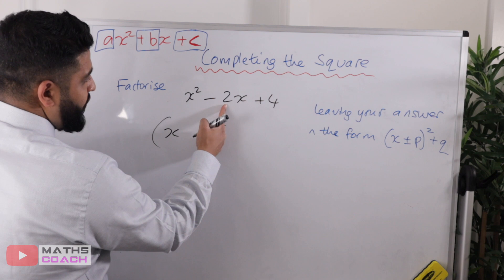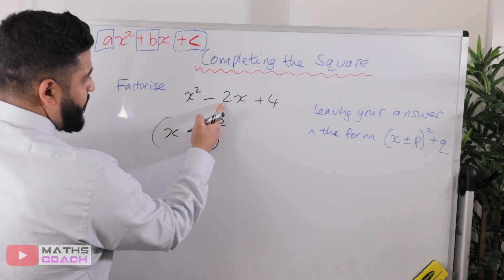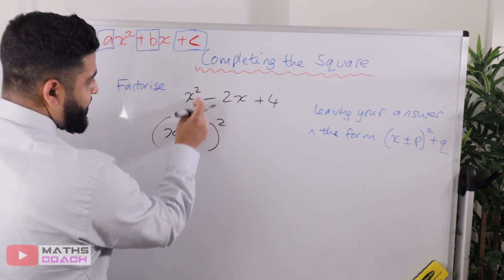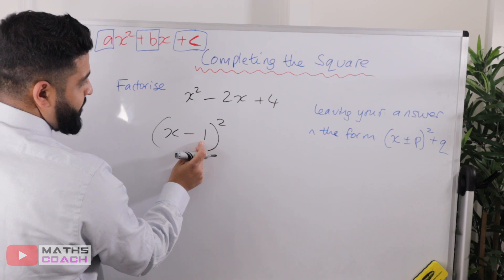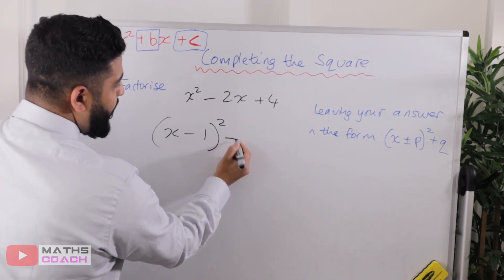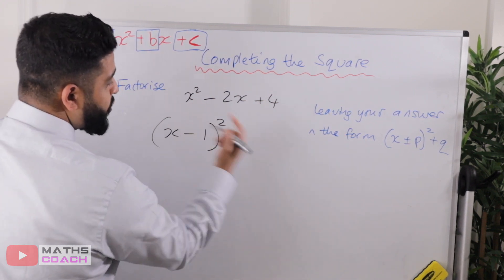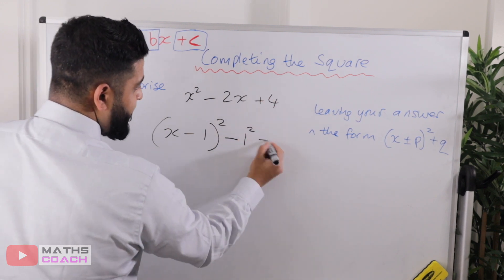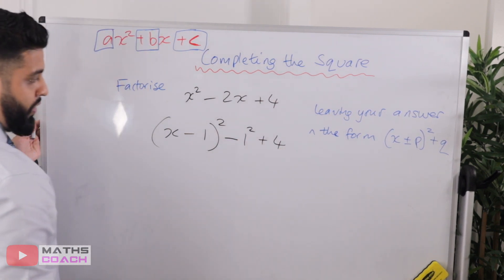Step number two, divide the coefficient of b by two. So two divided by two is one. So we get minus one. Remember the b was minus two. So it's going to be minus one in here. And then take away that value squared. So one squared. And then we've got the plus four this time. So plus four outside.